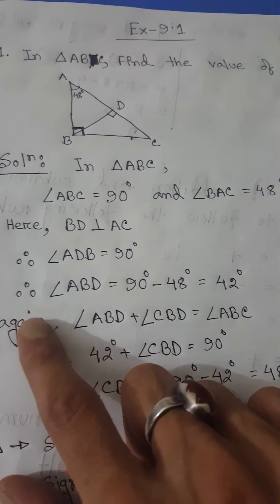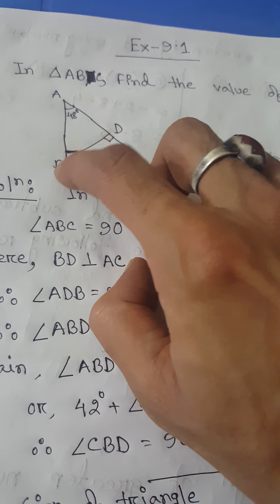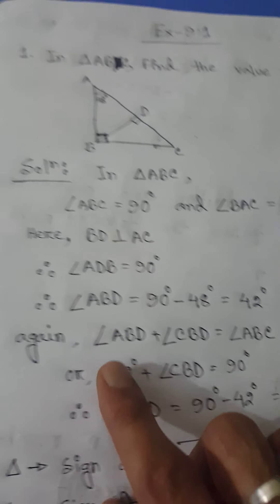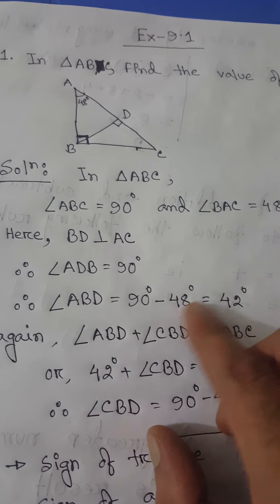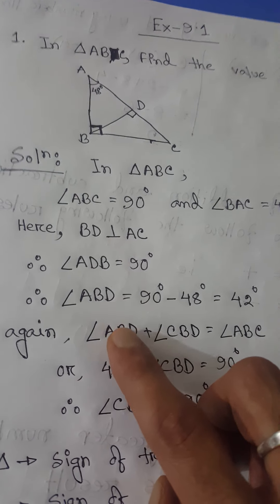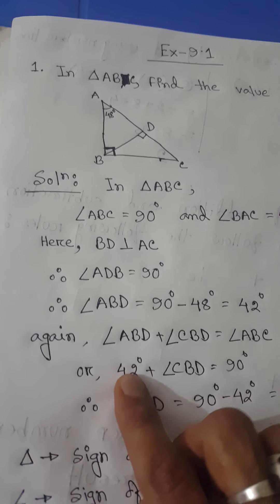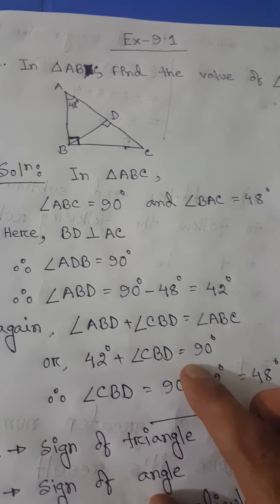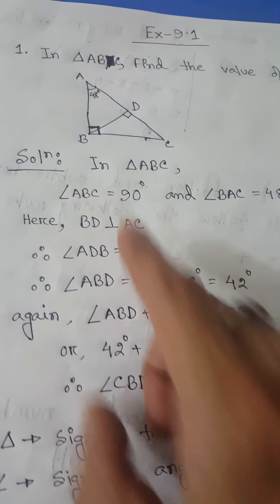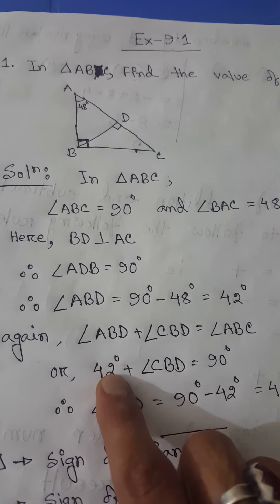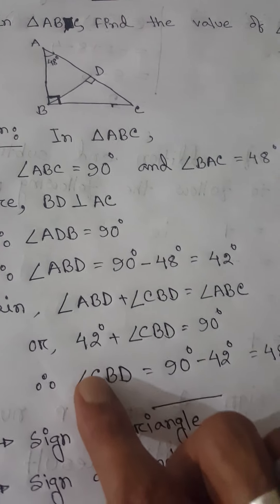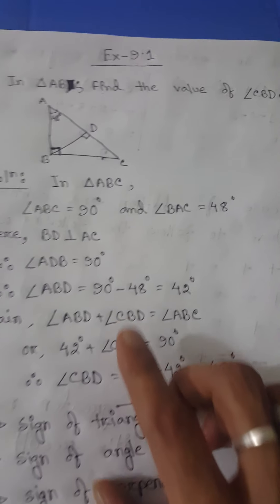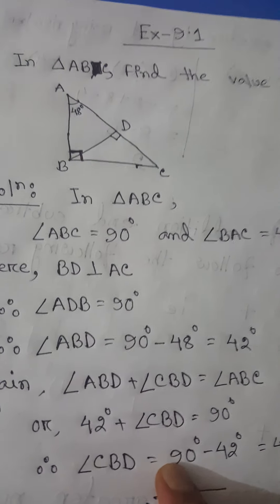Now to find angle CBD: angle ABD plus angle CBD together make the full angle ABC. So we write angle ABD plus angle CBD equals angle ABC. We found angle ABD is 42 degrees, and angle ABC is 90 degrees. Therefore angle CBD equals 90 degrees minus 42 degrees, which is 48 degrees.